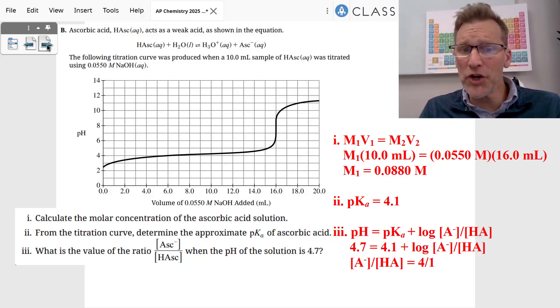Well, from the titration curve, we want to find the pKa. How do we find the pKa? We go halfway to the equivalence point. If the equivalence point's at 16 milliliters, go halfway, go to 8 milliliters. What's the pH at 8 milliliters? It's approximately 4.1.